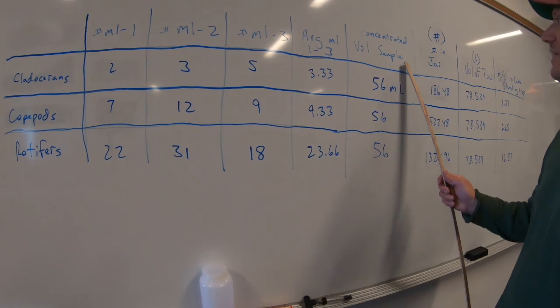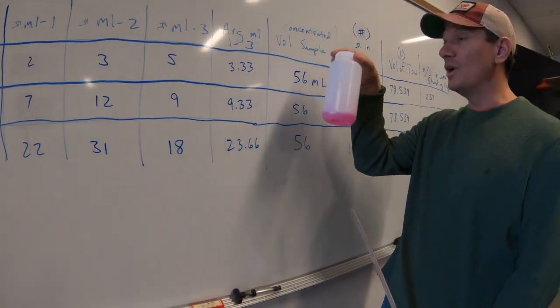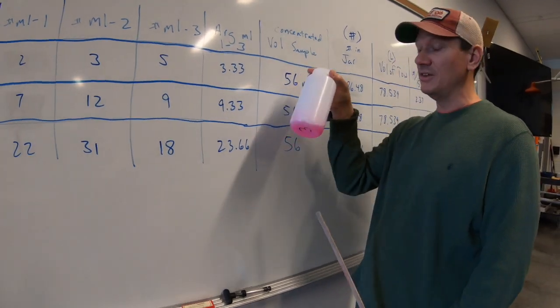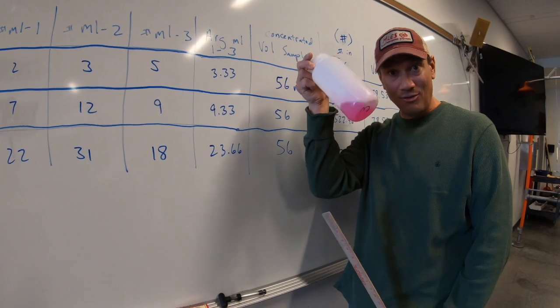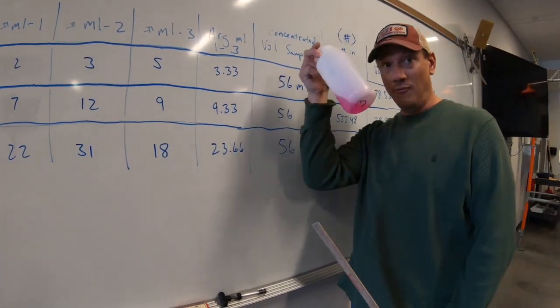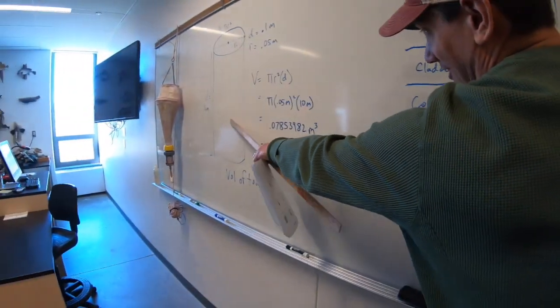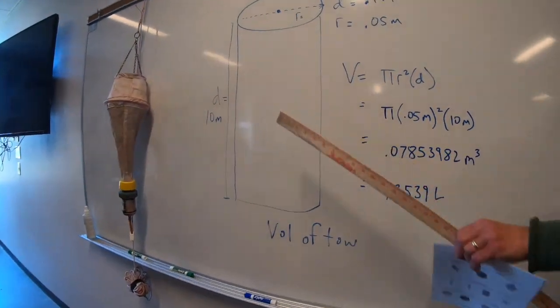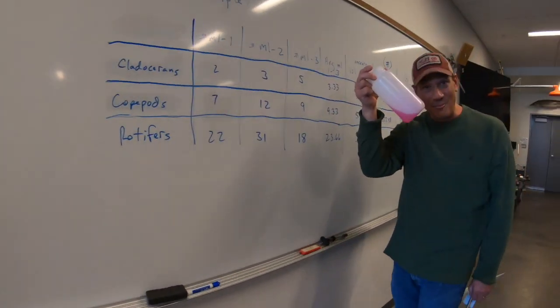And now what we did is we looked at the concentrated volume of our sample. So what the Wisconsin plankton net did is it took the volume of the water in the lake and it concentrated in here. So we need to know what that is. The number of plankton in here are the number of plankton that are back over here. All we did was we took this and we concentrated into here.